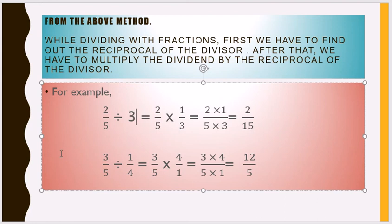Next example: fraction divided by fraction. So 3 by 5 divided by 1 by 4. Here 3 by 5 is the dividend and 1 by 4 is the divisor. We take the reciprocal of the divisor, which is 4 by 1. So in the next step, 3 by 5 into 4 by 1, that is equal to 3 into 4 divided by 5 into 1, which is equal to 12 by 5.